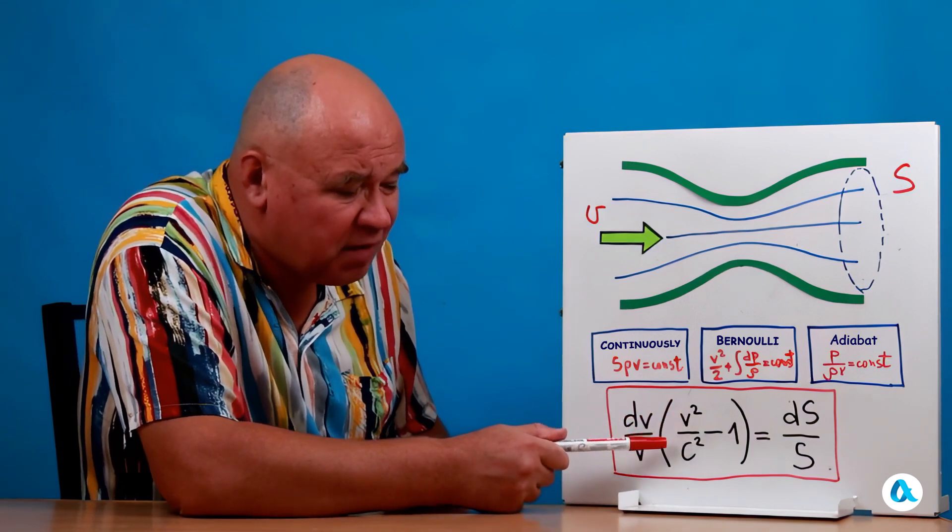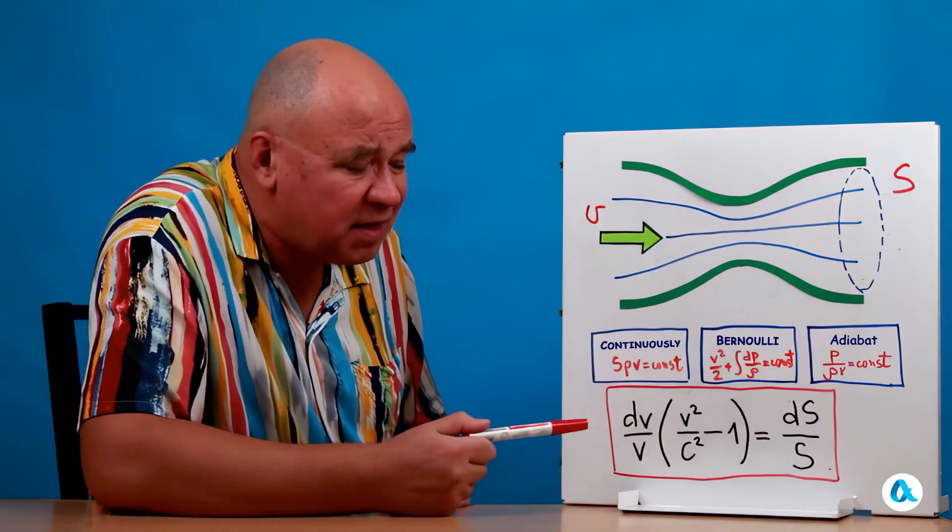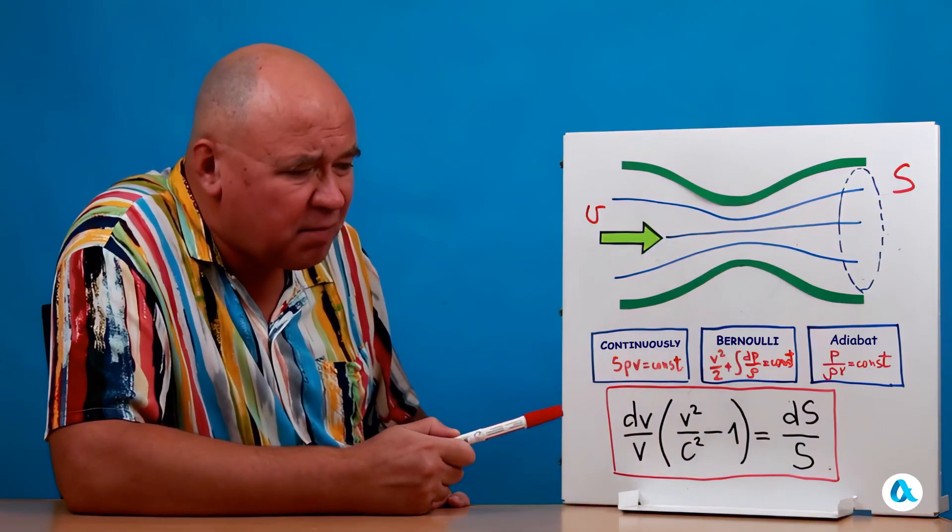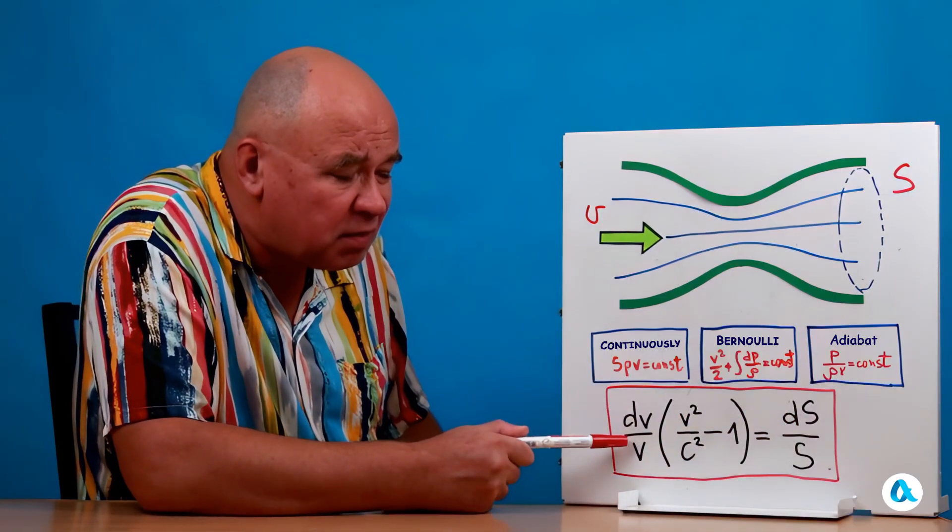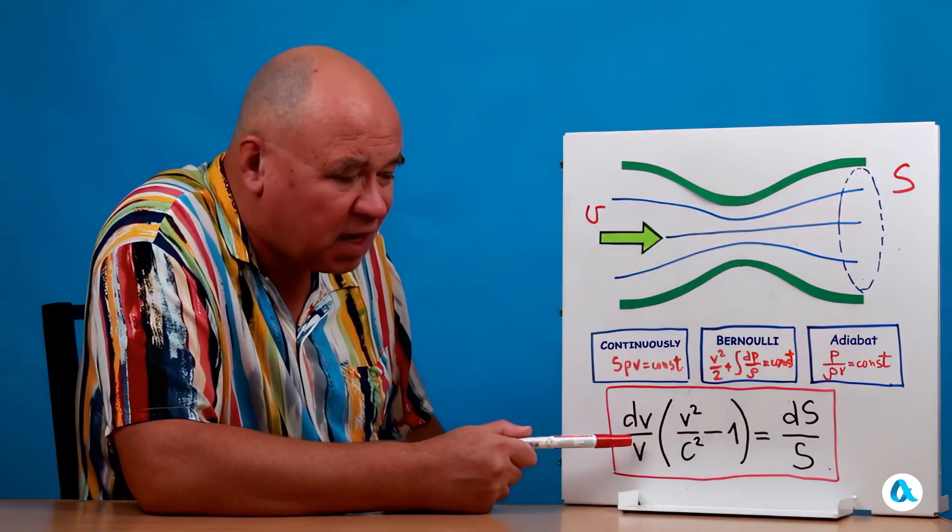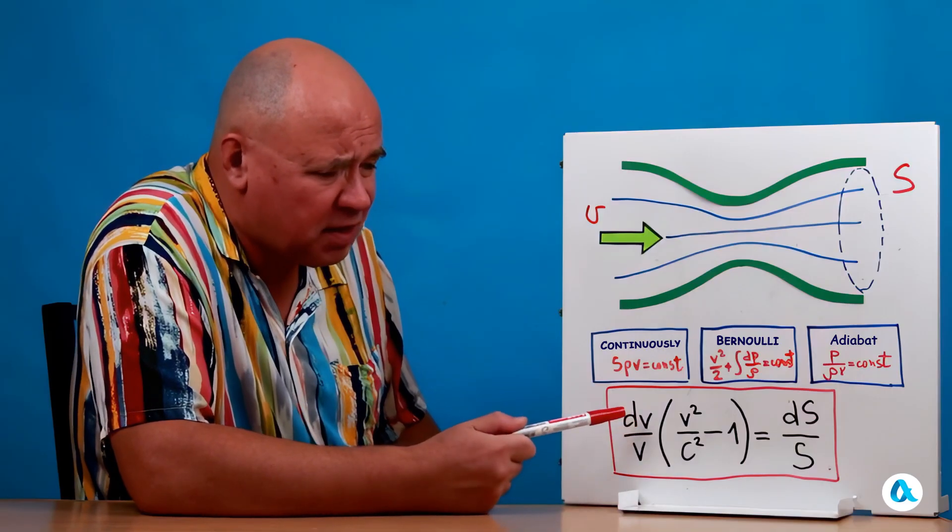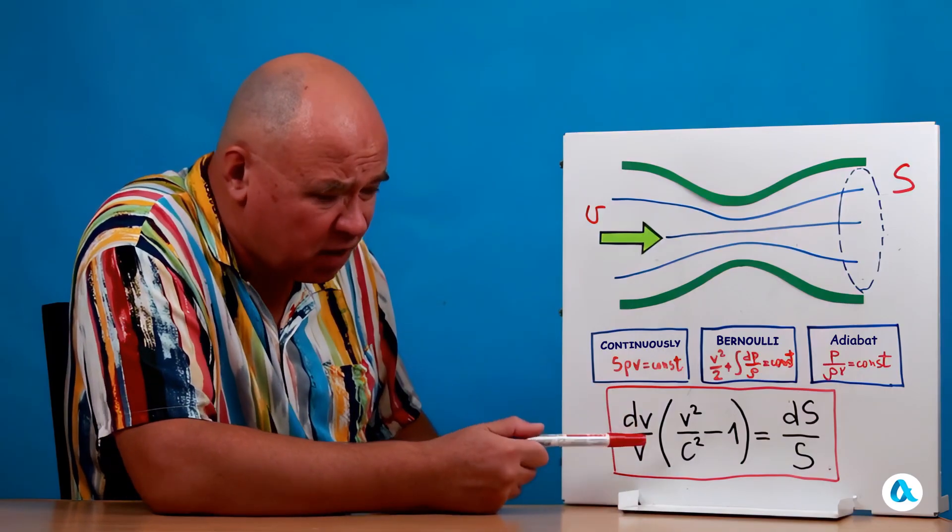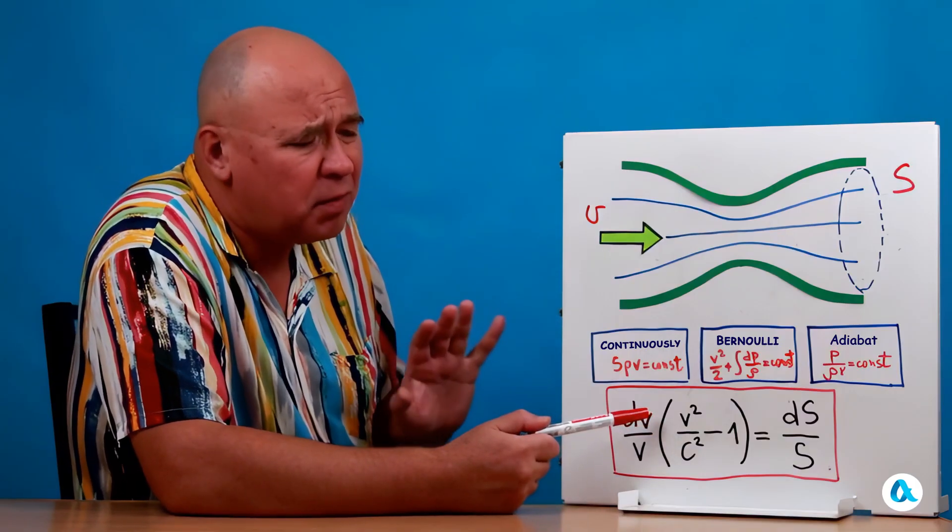If V at a given cross-section is less than c, then this bracket is negative. And that means, when the area increases, the velocity decreases. When the area decreases, the velocity increases. But this is the case for subsonic flows. V is less than c.